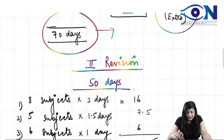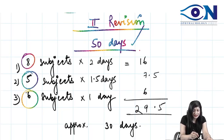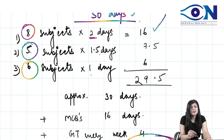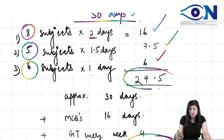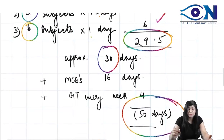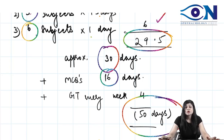The second revision consists of 50 days. The subjects remain the same — eight large, five intermediate, and six small — but the time per subject is reduced. Large subjects now get two days instead of three, intermediate subjects get 1.5 days instead of 2.5, and small subjects get one day instead of 1.5. This comes to 8×2=16, 5×1.5=7.5, and 6×1=6, totaling 29.5 days — so another full revision in about one month.